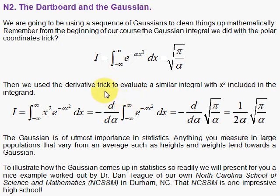Dr. Fizz, theoretical physics, the dartboard and the Gaussian. Early in our course we did this integral e to minus alpha x squared over all x by setting up another integral with y, multiplying together, going to polar coordinates, integrating, and then taking the square root. This is our result. I call that the polar coordinates trick.